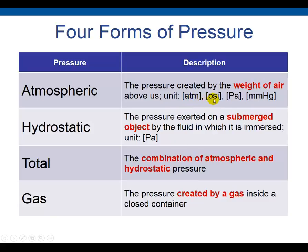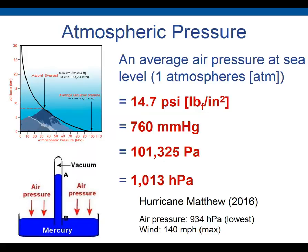Let's look at air pressure first. The units are ATM, PSI, Pascal, and mm mercury. Air pressure is the weight of air above us — 14.7 PSI. Because the air has weight, there is pressure. Our body system is exactly balanced with the air pressure, so we don't feel it. But if we go deeply into water or submerge, we can feel high pressure — that is hydrostatic pressure.